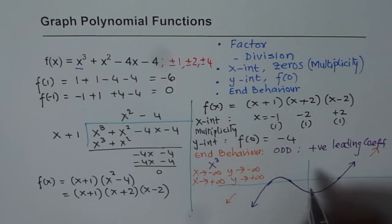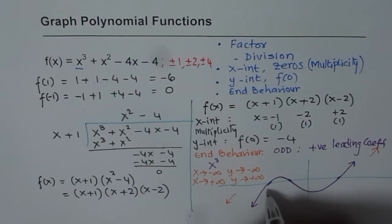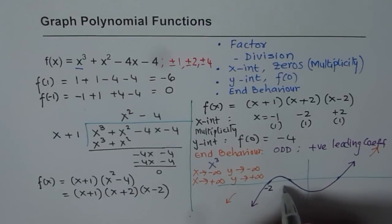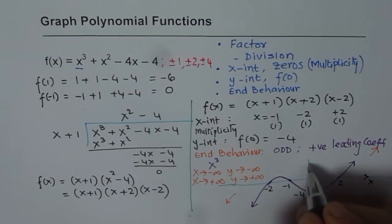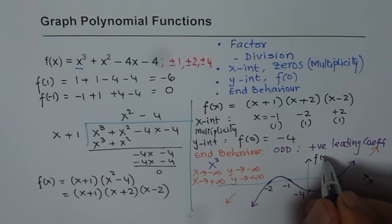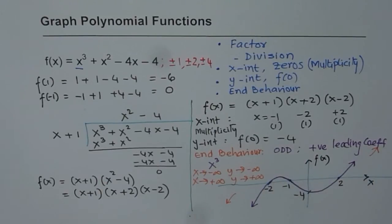It is a good idea and it is necessary to label. So we have minus 2, minus 1, 2. And this y-intercept is minus 4 for us. And that is x. And this is f(x). That is how you graph a polynomial.